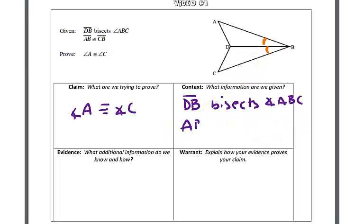We're also given that AB is congruent to CB. I'm going to mark that in the diagram.